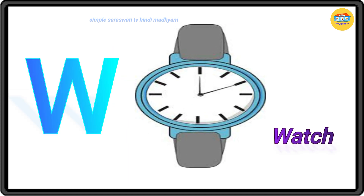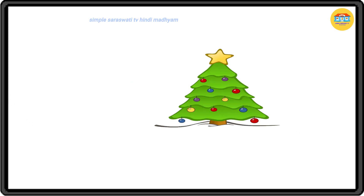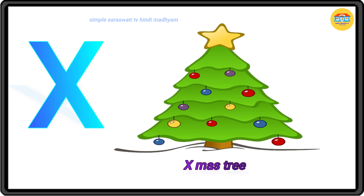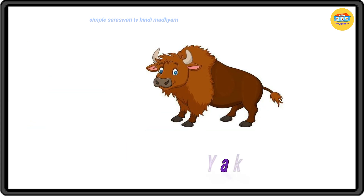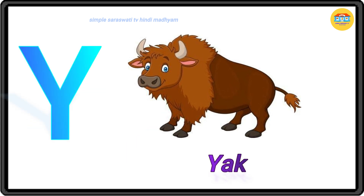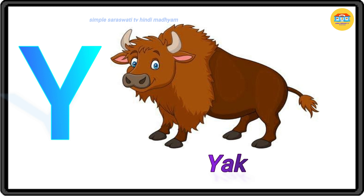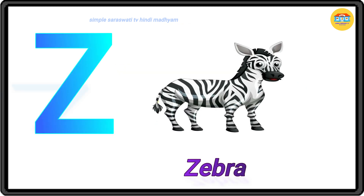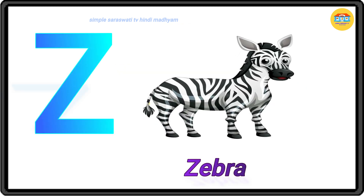W for watch, X for axonokstree, Y for yak, Z for zebra.